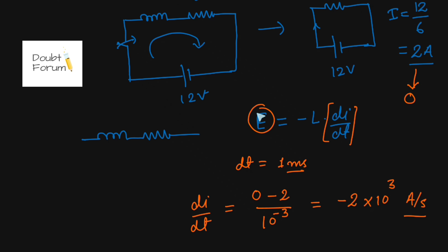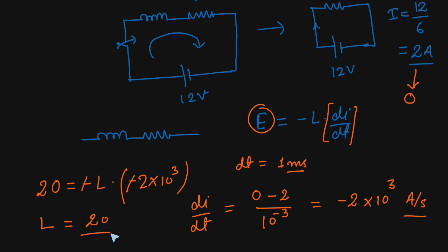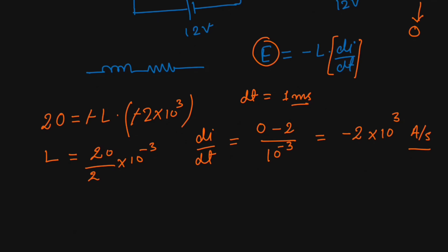The EMF induced during switching across this coil is 20 volts, so e = 20 volts. Using e = -L(di/dt): 20 = -L × (-2 × 10³). The two negatives cancel, giving L = 20 / (2 × 10³) = 10 × 10⁻³, which comes out to be 10 millihenry.